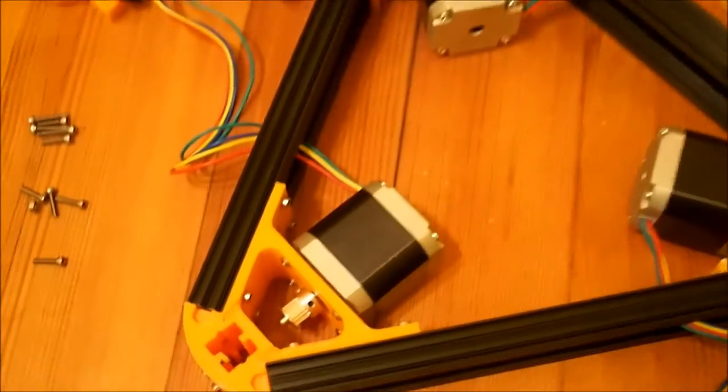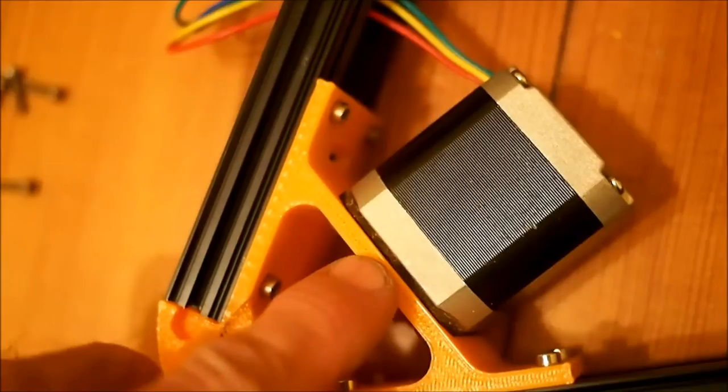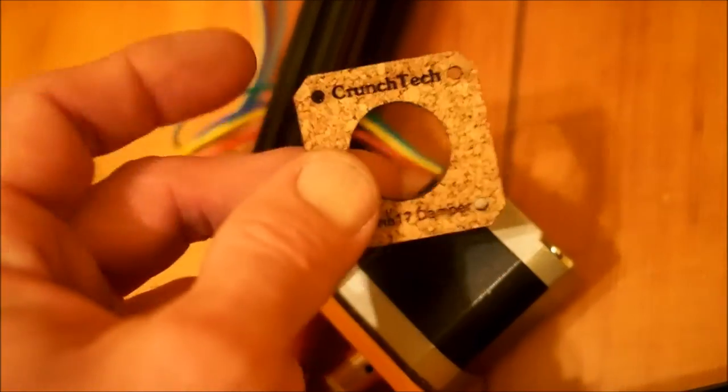One note about the motors before we continue is you'll see as I zoom in here that there is a cork gasket there between the motor and the frame that I've put in. It wasn't on the original parts video that I did, it was something that I overlooked, but I picked these up from Crunch Tech and they're about 2mm thick and they're a nice little squishy gasket that should reduce any vibration that comes off that motor and increase the quality of the prints.